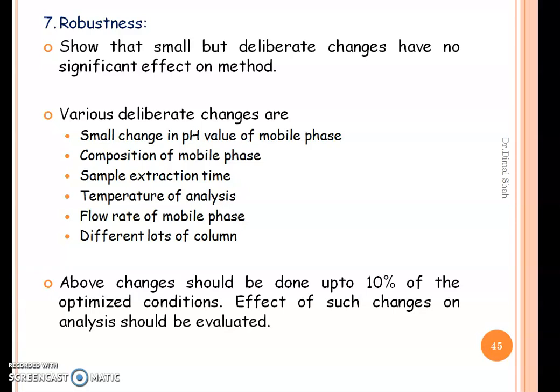The seventh parameter is robustness. It shows that small but deliberate changes have no significant effect on the method. We have to carry out small deliberate changes in conditions like small change in pH values, composition of the mobile phase, sample extraction time, temperature of the analysis, flow rate of the analysis, or different lots of column, and study the effect of these changes on the chromatogram and analysis.